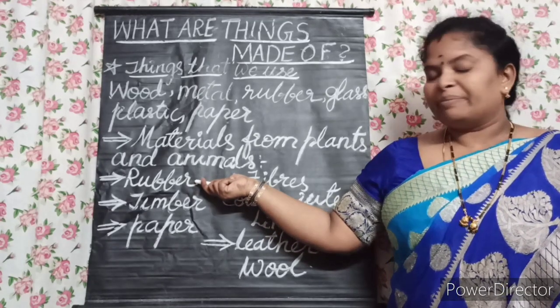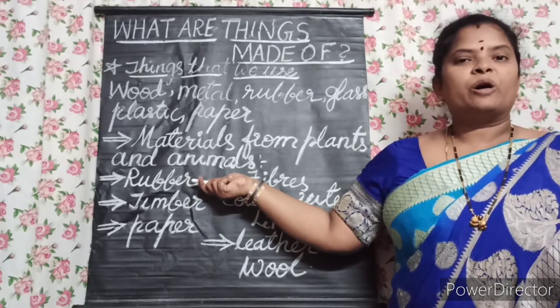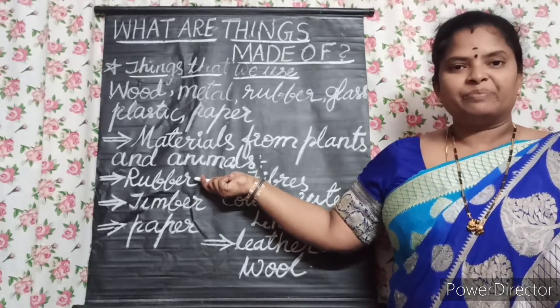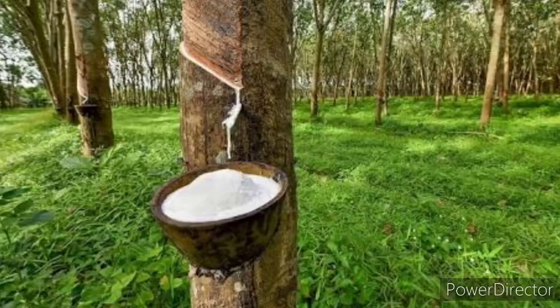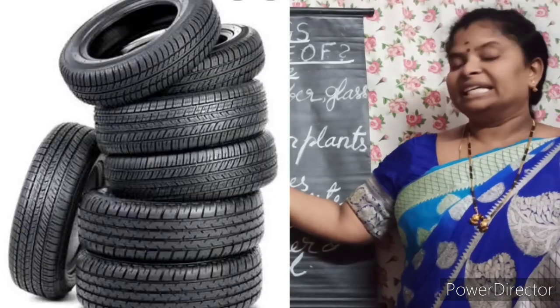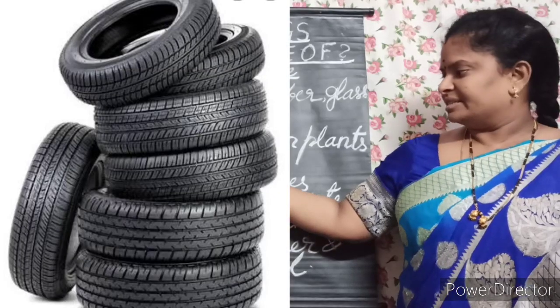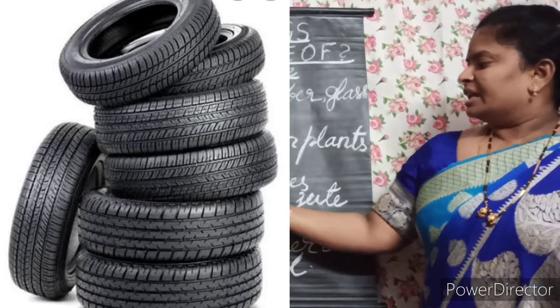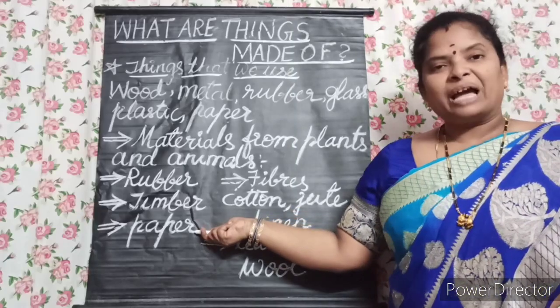Coming to the next material: rubber. Rubber is obtained from the rubber tree in a liquid form. Rubber is used to make tires and erasers.